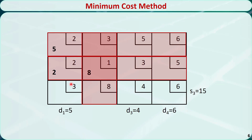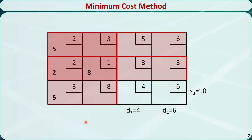Continue with the process. Find the cell with the minimum cost in the remaining tableau, which is this cell. The largest amount we can allocate is 5. We put 5 here and subtract it from S3 and D1. S3 will be 10 and D1 will be 0. This is the new tableau, and since D1 is equal to 0, we cross out the first column and remove D1.